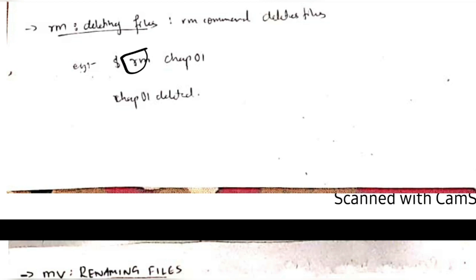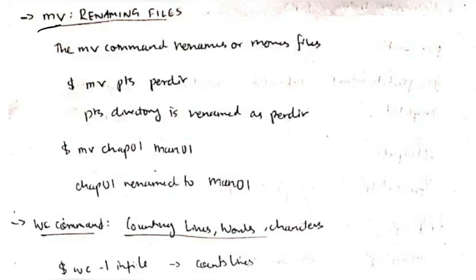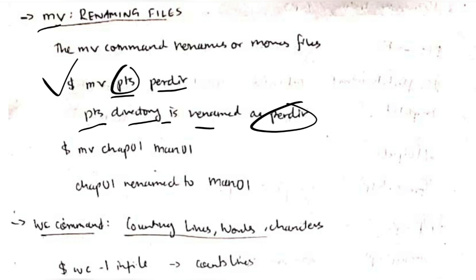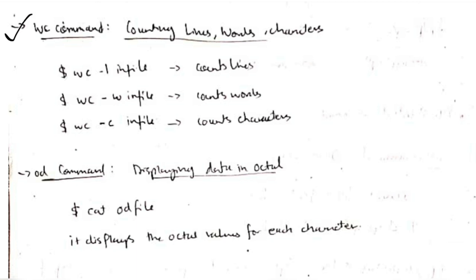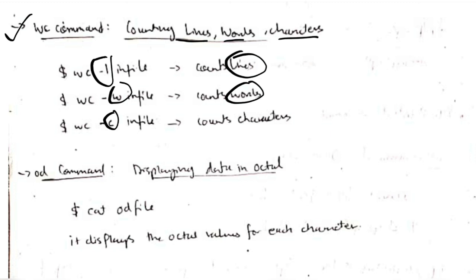To delete a file we use 'rm' — if I write 'rm chap1', chap1 will be deleted. 'mv' is for moving files or renaming — if I write 'mv pts per', the directory pts is renamed as per; which directory we want to rename we write here, and the new name goes here. Another example: chap1 is renamed to man1. The 'wc' command is used to count the number of lines, words, and characters in a file. 'wc -l' counts lines, 'wc -w' counts words, and 'wc -c' counts characters.